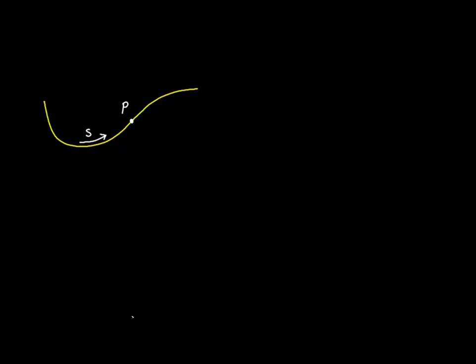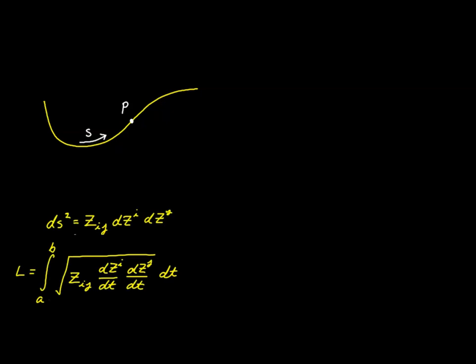We've seen this sort of diagram several times before. What we've got is a curve through space — the yellow line — and on it is point P. We locate point P with the arc length measured from the beginning of the curve, so our arc length is a value of S. Back in video 15, we derived expressions for the metric equation and the arc length. If you need a review, go back to video 15 and see how we developed these expressions relative to a curve going through space.